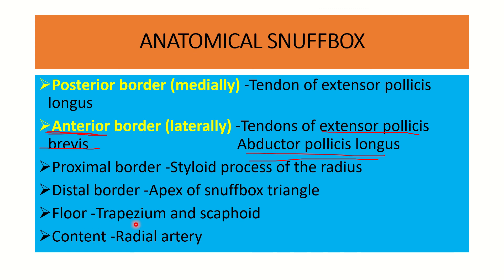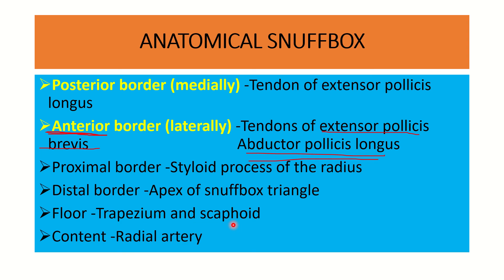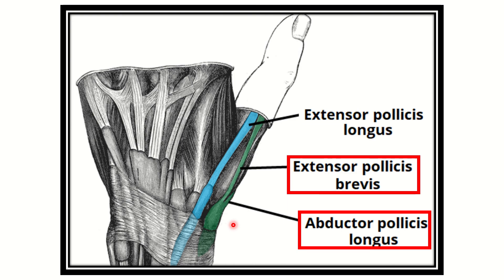The floor of the anatomical snuffbox is formed by two important bones: one is the trapezium and the other is the scaphoid. These are bones from the two rows of carpal bones — scaphoid from the proximal row and trapezium from the distal row.